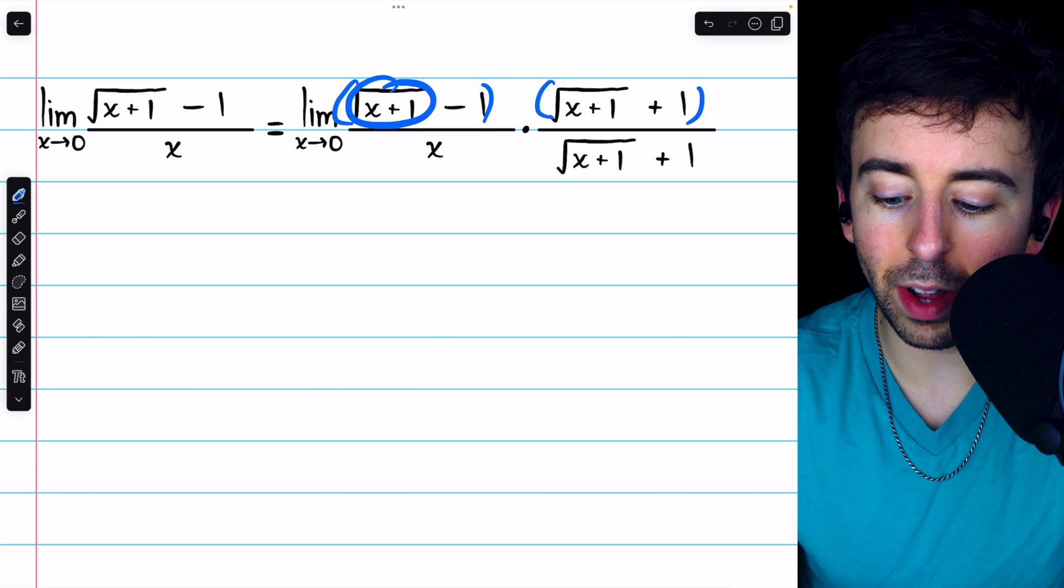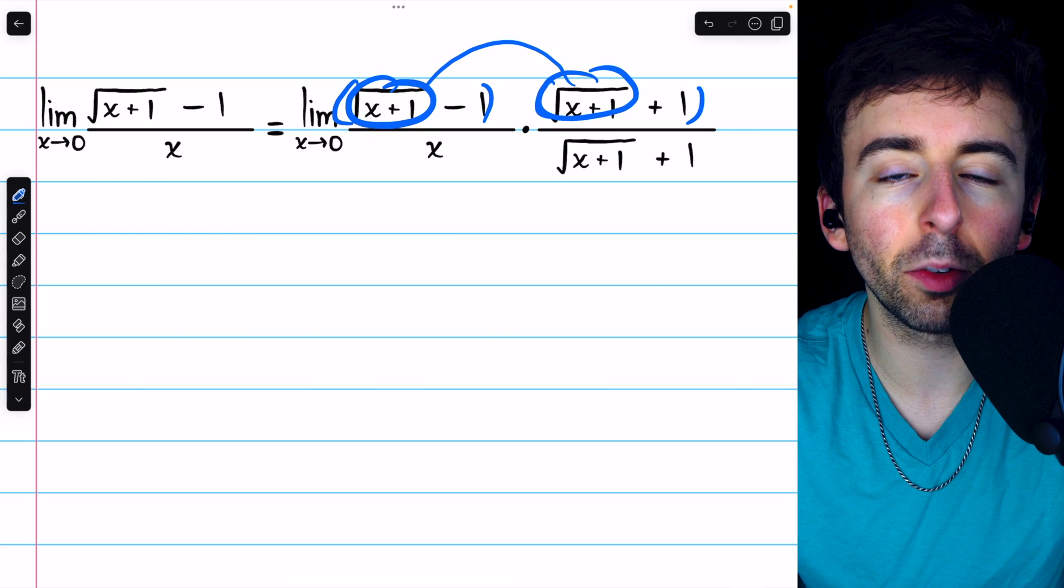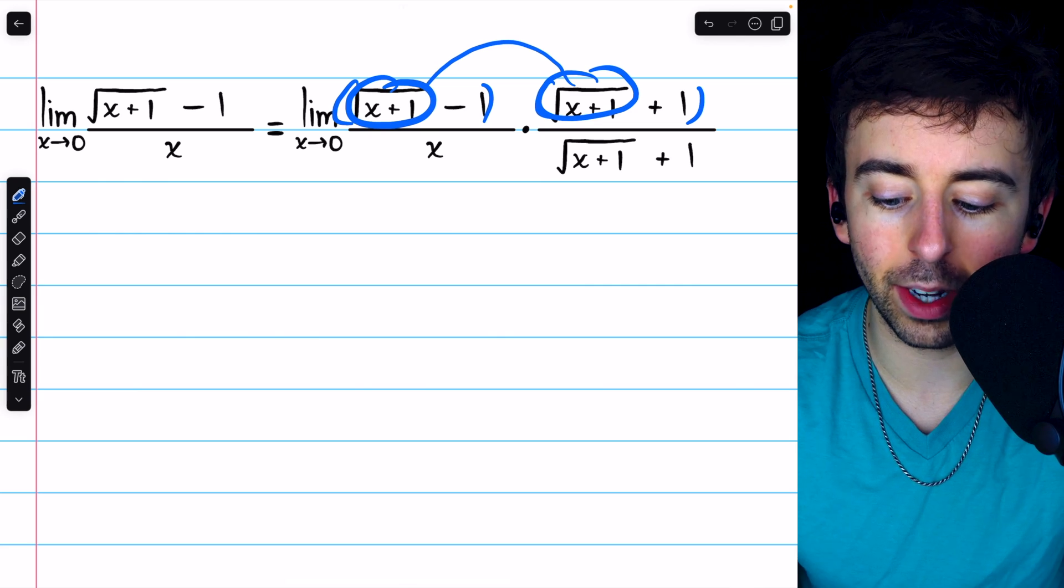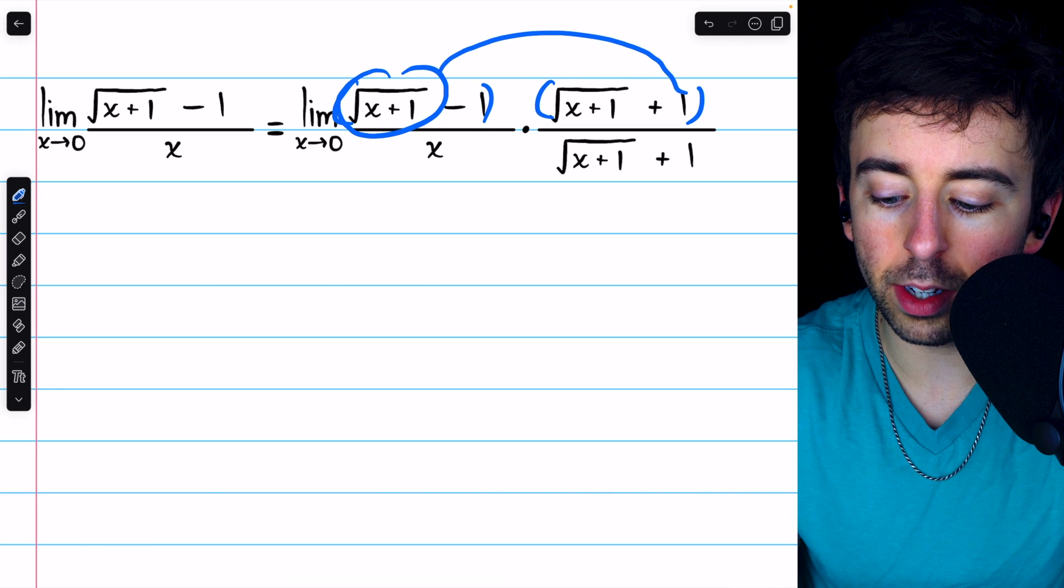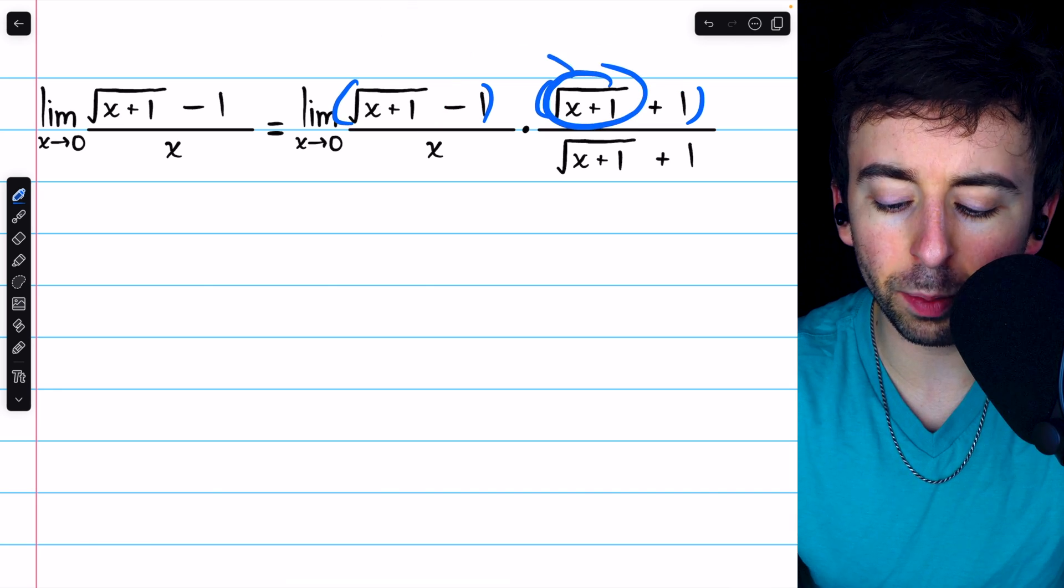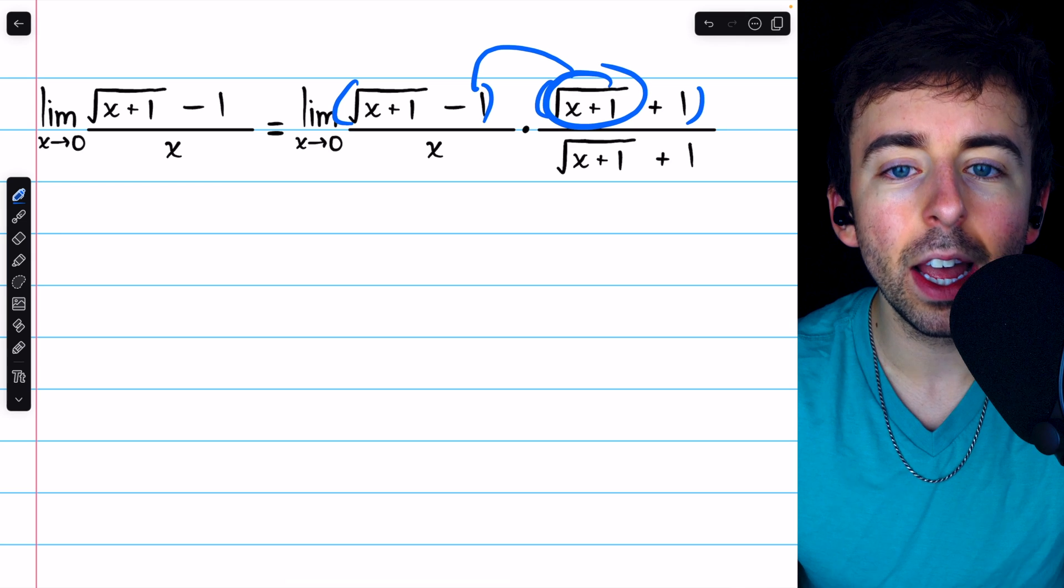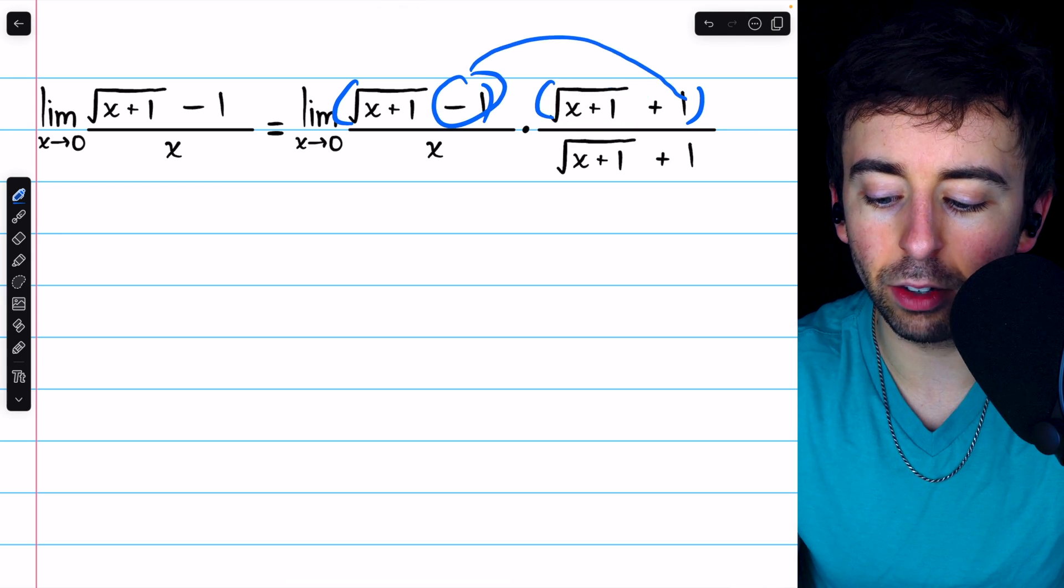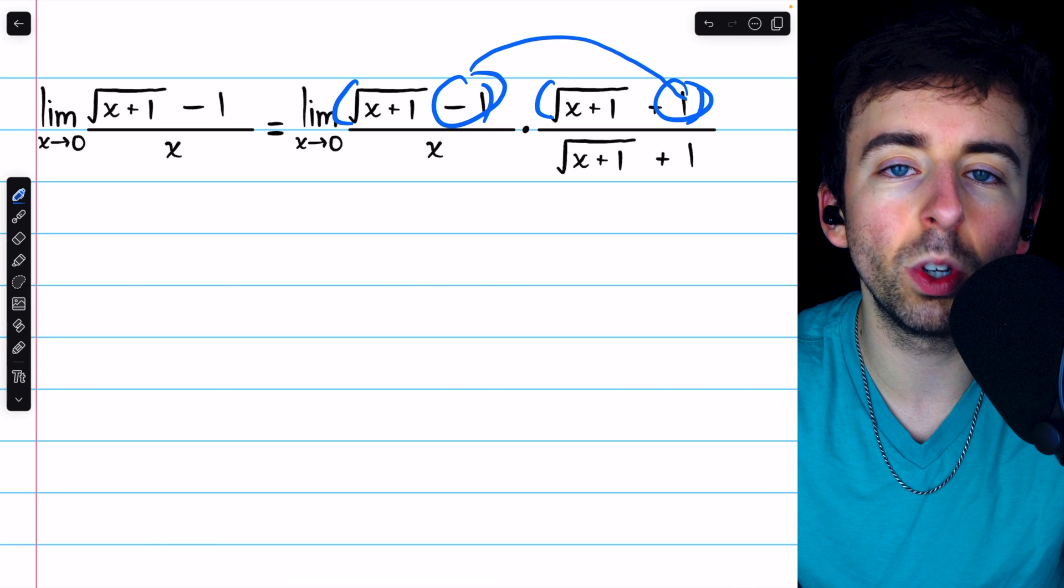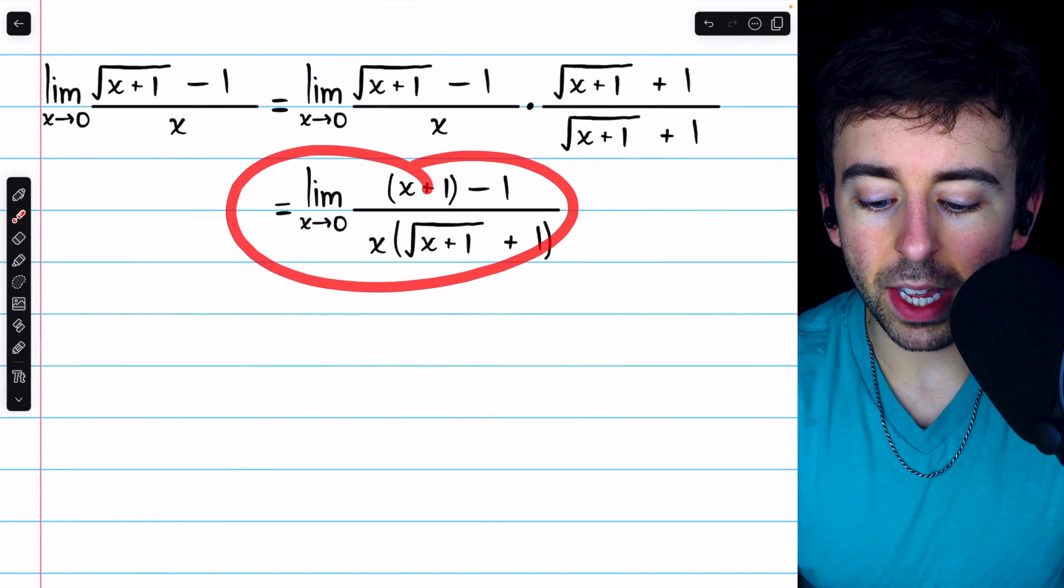we would get the square root of x plus 1 times the square root of x plus 1. The square roots cancel out, and it's just x plus 1. We'd also get the square root of x plus 1 times positive 1, and the square root of x plus 1 times negative 1. Those two terms would cancel out. The only thing that would be left is minus 1 times positive 1, which is minus 1.